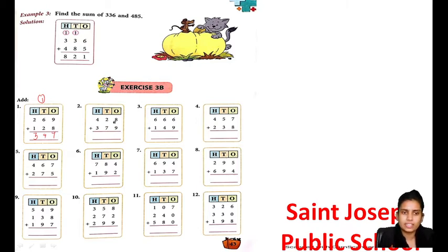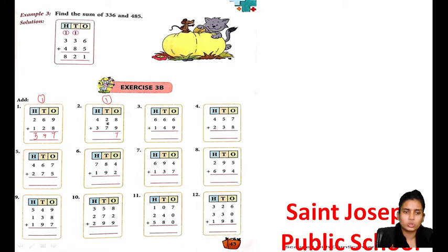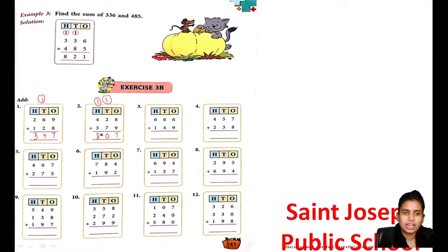Now I am taking the second question. 8 plus 9 again 17, 1 carry. 1 plus 2 is 3. 3 plus 7 is 10, 1 carry. 4 plus 5 is 9, 4 plus 1 is 5, so 5 plus 3 is 8.